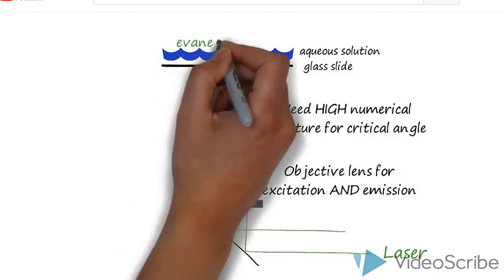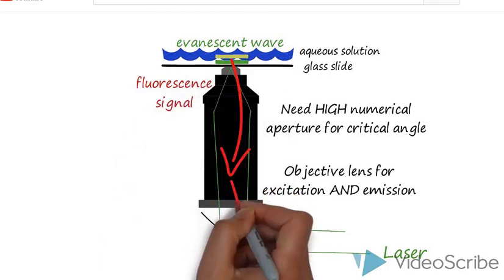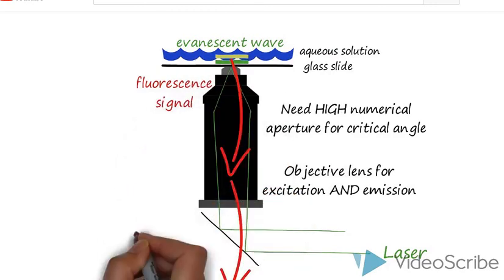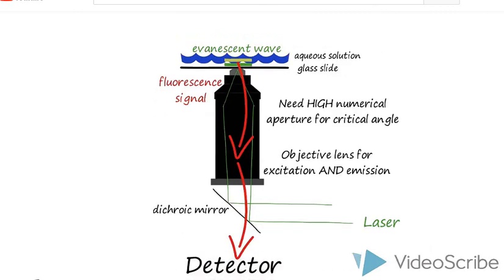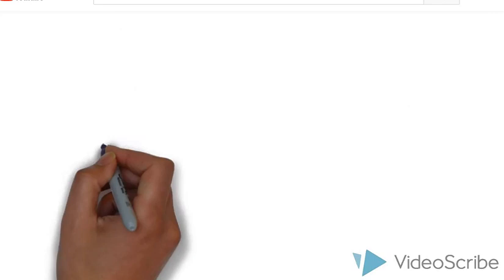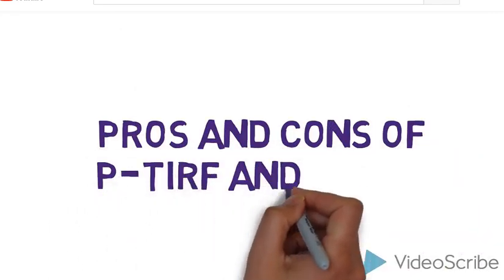The evanescent wave is generated, and the fluorescent signal travels down the objective with the reflected laser light. The excitation and emission sources are separated by a dichroic mirror, allowing only the fluorescent signal to reach the detector. Both P-TIRF and O-TIRF can be used for nanoscale and single-molecule imaging.